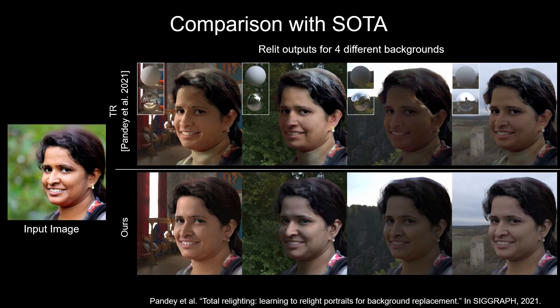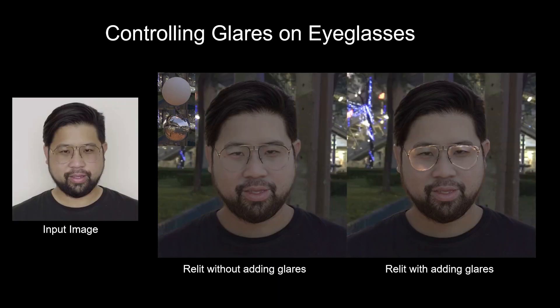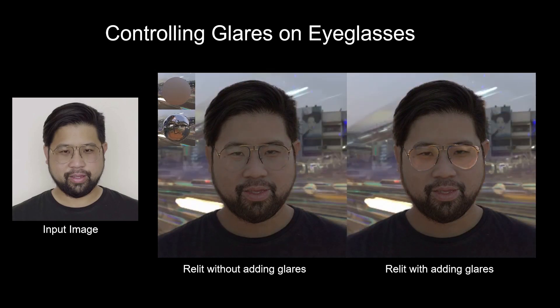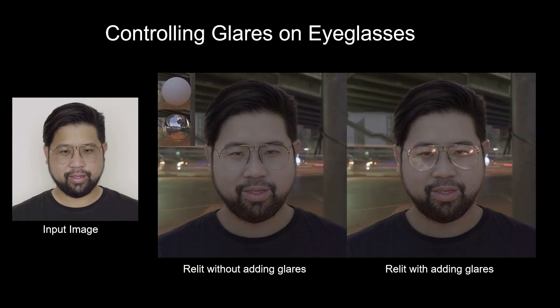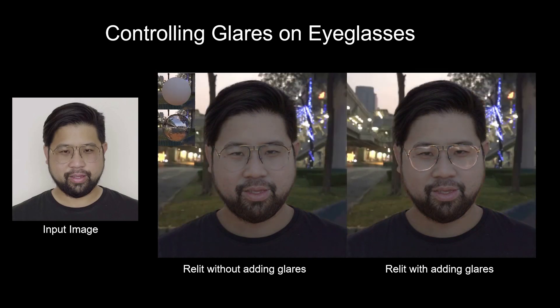We show that our network not only achieves preferable results compared to methods trained on light stage data, but also enables new features such as controlling the glares on eyeglasses.